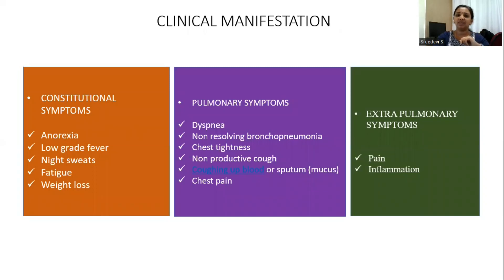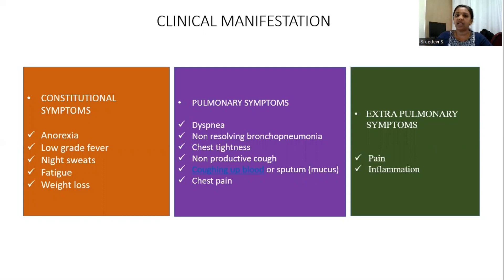Coming to the clinical manifestations of TB — the first category is constitutional symptoms, pulmonary symptoms, and extra-pulmonary symptoms. The constitutional symptoms are anorexia, low-grade fever, night sweats, fatigue, and weight loss.